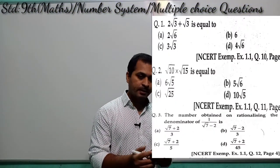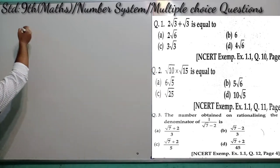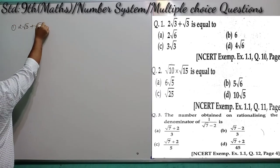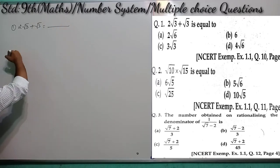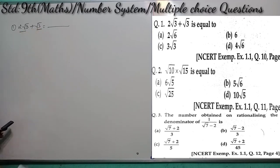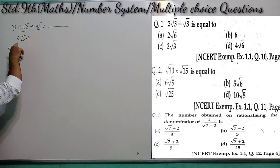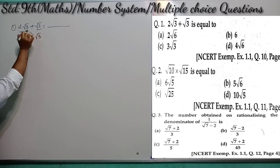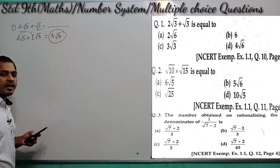Let us start. In the very first question, we need to find the value of 2√3 + √3. Here you can see that 2√3 and √3 are like terms — √3 appears 2 times and 1 time respectively. So 2 plus 1 gives us 3√3. That is the correct answer.